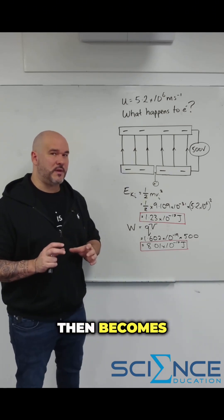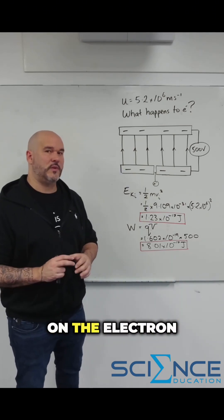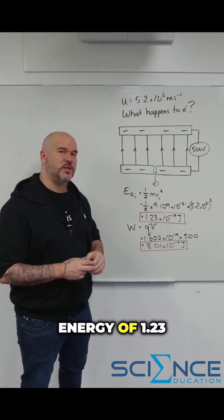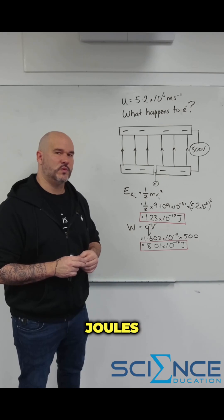So let's figure out where the electron turns around. The question then becomes how much work must be done on the electron to make it become stationary. If it's going in with the kinetic energy of 1.23 times 10 to the minus 17 joules,